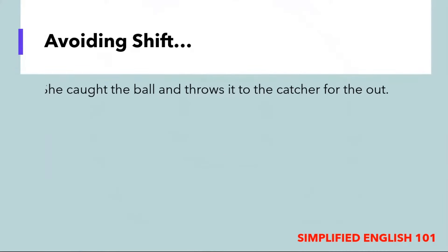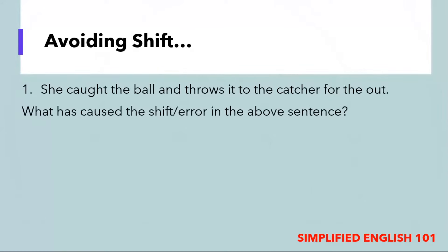Let us look at our first example. The first sentence reads: she caught the ball and throws it to the catcher for the out. For us to identify what the shift is, or how this shift created an error in the sentence, we need to first identify what the shift is. Notice that the sentence began by saying 'she caught,' and then the next verb is 'throws.' The shift is created by a shift in the verb tense. Note that the first verb is in the past tense — caught — and the second verb is in the present tense — throws. The sentence begins in the past tense and shifts to the present tense without any valid reason or cause, which has created an error.